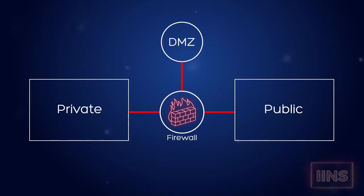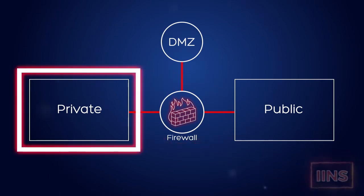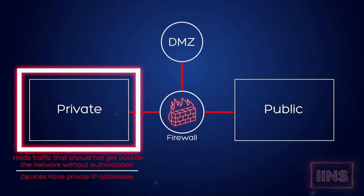First, understand that for network security zones, these zones are tied together through a firewall. In this particular course, we're going to be covering Cisco ASA firewalls later on. First, we have the private zone, otherwise known as the inside zone. This zone is going to hold traffic that should not get to the outside network without authorization. Your devices are going to have private IP addresses, and private IP addresses are non-routable IP addresses — in other words, a router cannot do anything with them. That's the private part of your network.